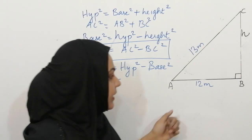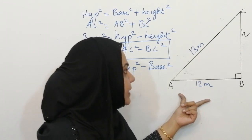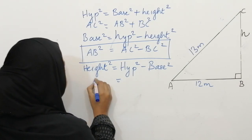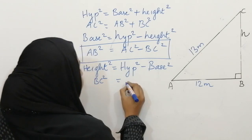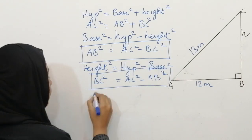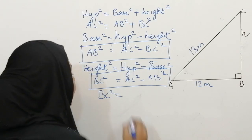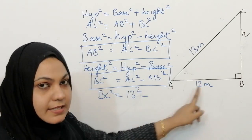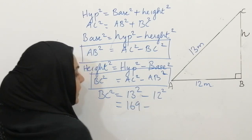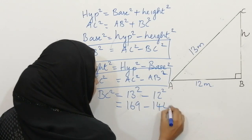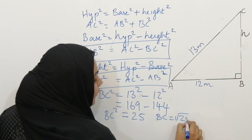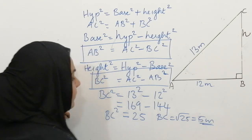Here AB is equal to 12 meters that is our base, and hypotenuse AC is given 13 meters. We have to find BC. BC square is equal to AC square minus AB square, that is 13 square minus 12 square, which is 169 minus 144, that is 25. So BC is equal to square root of 25, that is 5 meters. I hope you understood.